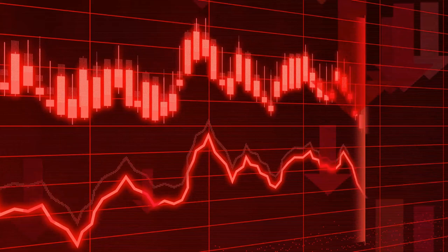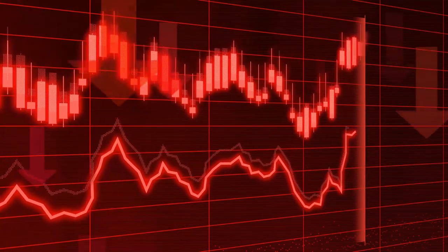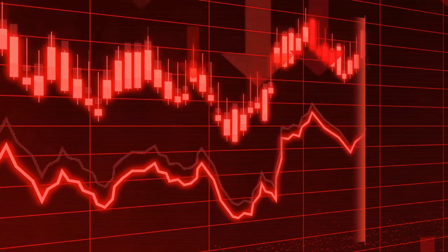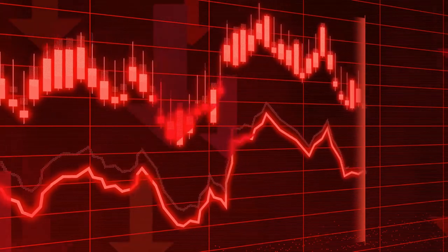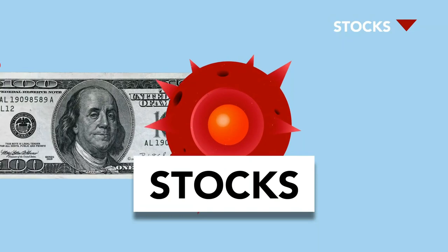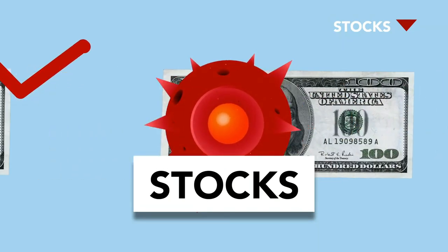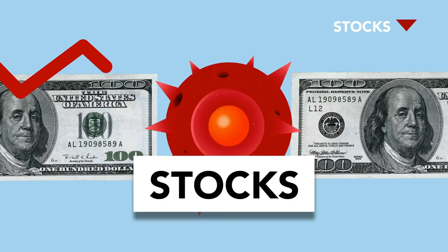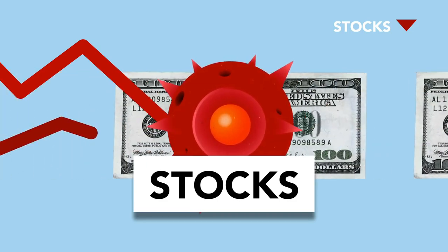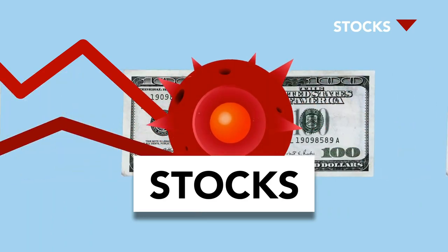A rash of bank failures followed in 1930, and as the Dust Bowl increased the number of farm foreclosures, unemployment topped 20% by 1933. Presidents Herbert Hoover and Franklin D. Roosevelt tried to stimulate the economy with a range of incentives, including Roosevelt's New Deal programs, but ultimately it took the manufacturing production increases of World War II to end the Great Depression.